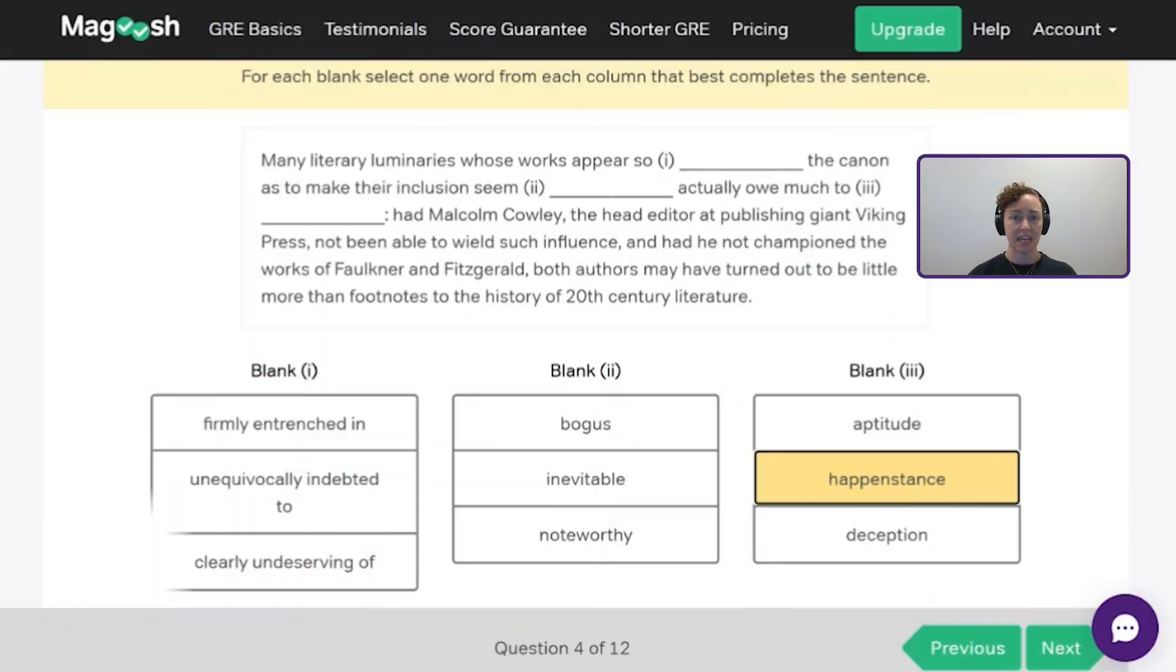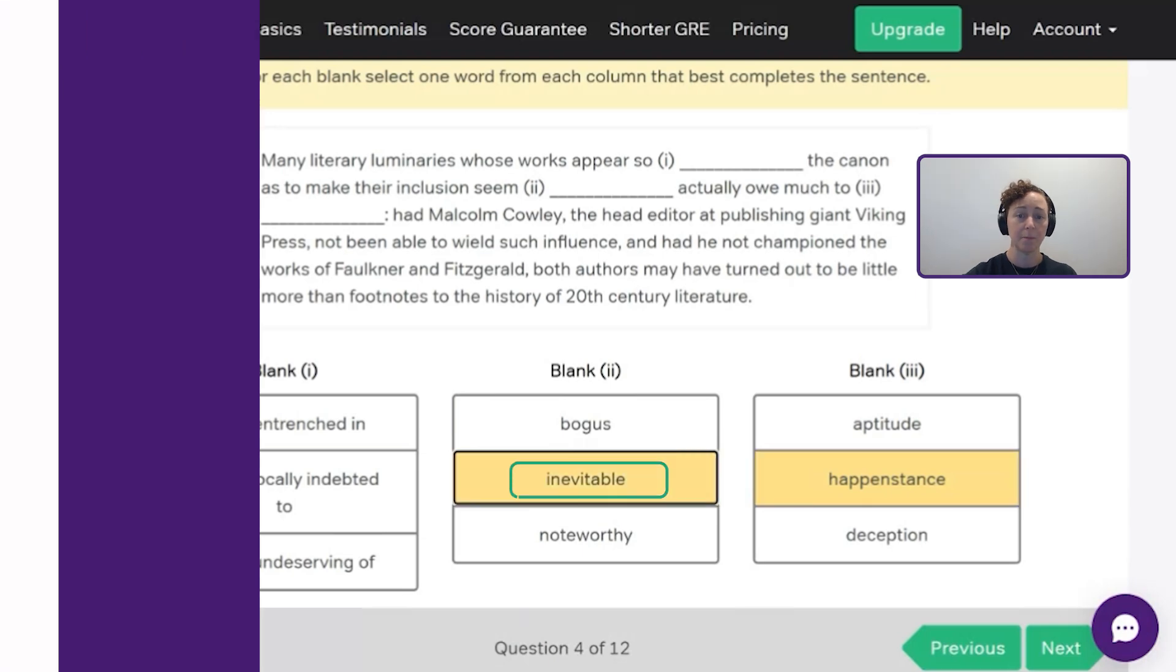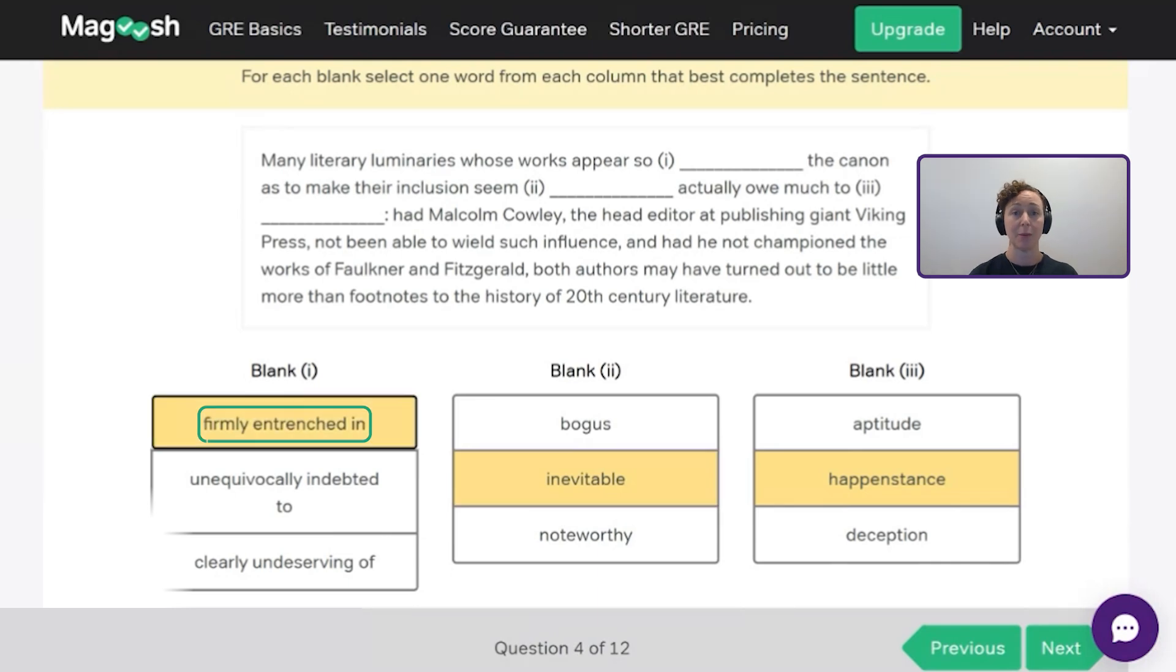I feel good about that. Now if I look at these other two blanks, their works appear so blank the canon as to make their inclusion seem something, but they actually owe much to happenstance. So this first part is indicating that we have to take it for granted. These literary luminaries, they must be famous because they're so awesome, and it isn't because of those other things. So we need something that indicates that they belong to the canon, and we just take it for granted that they would be there. So it seems taken for granted. That works in my mind for what goes with the second blank. And the closest thing I can see to that, to take something for granted, is inevitable. And then now we need something to kind of align with inevitable. Unequivocally indebted to doesn't really make sense in the context here. Neither does clearly undeserving of. So I'm going to go with firmly entrenched in. That makes the most sense. And there we go. Those are my answers to that three blank text completion. They can be complicated and long.